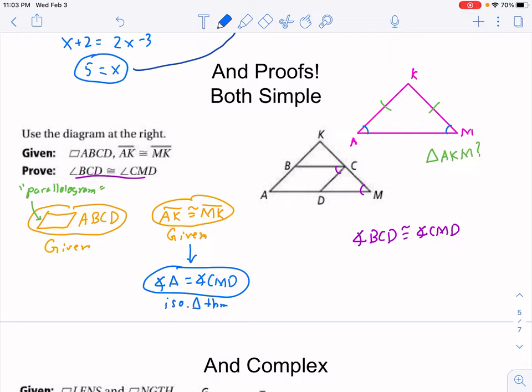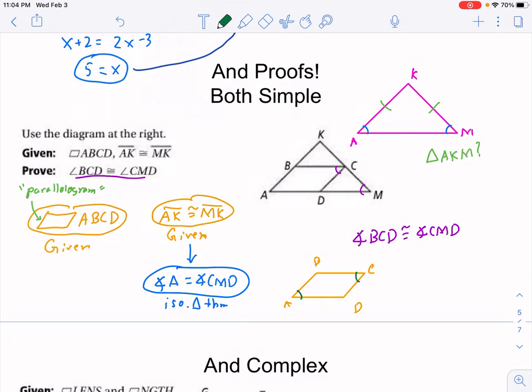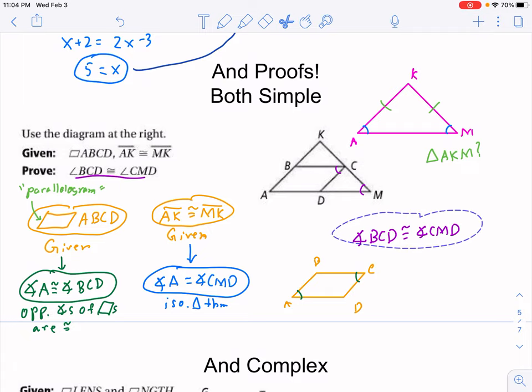Well, now we've got angle A related to CMD, we need to get angle BCD involved here somehow. And that's where this parallelogram comes into play. We've got A, B, C, D here. Well, A and C are opposite angles. And I can call that angle C BCD. Opposite angles of parallelograms are congruent. So, we're all set.